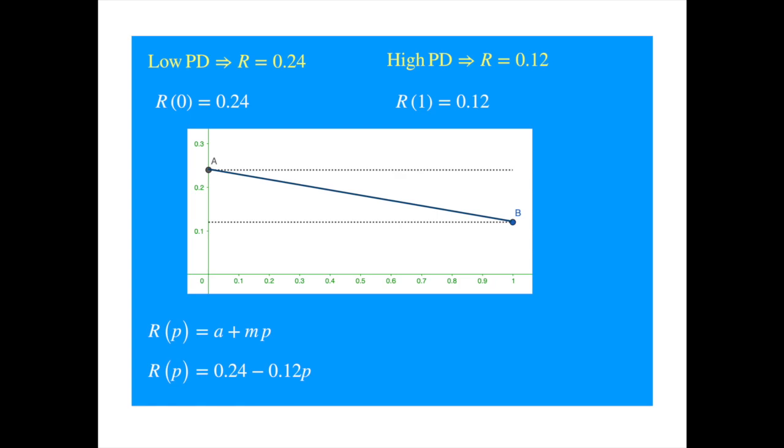Remember, the slope is the vertical distance divided by the horizontal distance. And we see in the chart that when the probability of default increases by 1 from 0 to 1, the R goes down by 0.12 from 0.24 to 0.12. Most of us were never really sold on the idea of negative slopes. So, let's reinterpret the equation by changing the x-axis to the probability of non-default. Now, the intercept is 0.12, and the slope is positive 0.12.